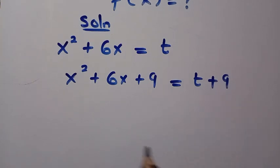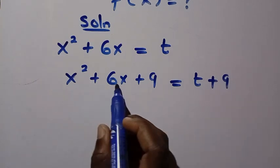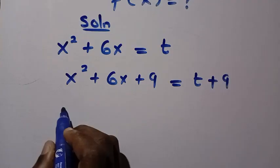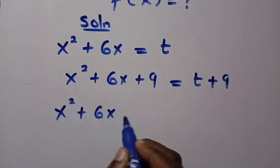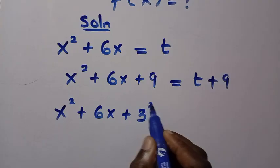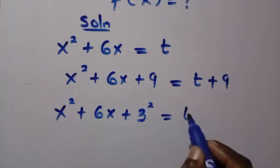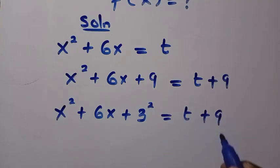For x² + 6x + 9, I can write it as x² + 6x + 3² = t + 9.